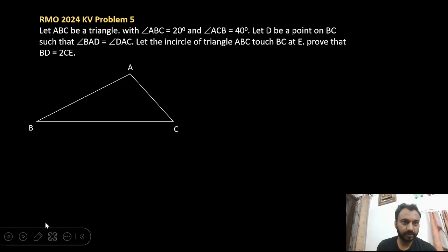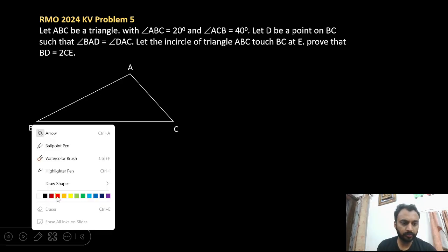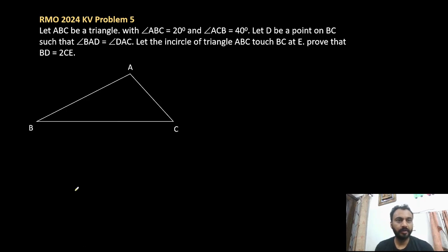Hello dear students, let's see question number 5 of RMO 2024 KV. In this we have a triangle ABC where angle ABC is 20 degrees and angle ACB is 40 degrees. And we have a point D on BC such that angle BAD equals angle DAC, so it means AD is an angle bisector.